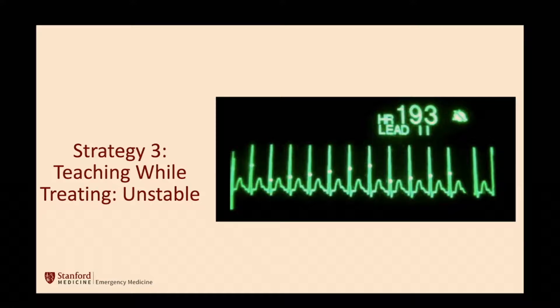Another strategy, which we commented on, is teaching while treating — also referred to as observation two-for-ones or three-for-ones. You're going to have to do these things anyway, so the more you can be in the room doing that focused evaluation of the unstable patient, watching the abnormal rhythm strip, having them articulate what they're thinking in real time — that's a direct observation two-for-one: treating while teaching.